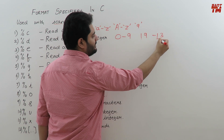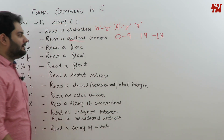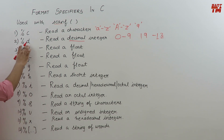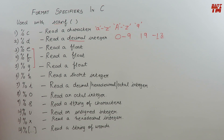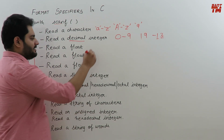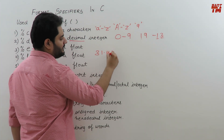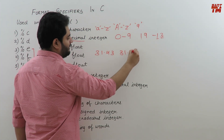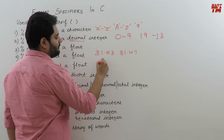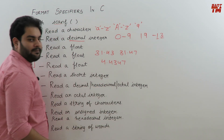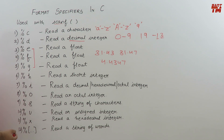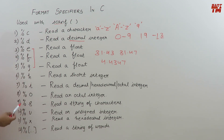%e, %f, and %g are all three used to read a float value. A float value means a real number such as 31.43, 31.47, or 4.4347. These are all real or fractional numbers, and any of %e, %f, or %g can be used to read them.